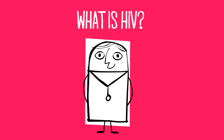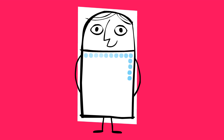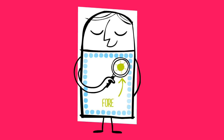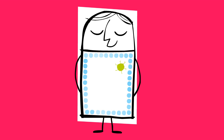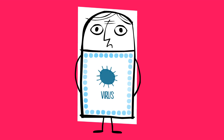What is HIV? Everybody has an immune system. The immune system is made up of lots of specialised cells designed to recognise any foreign cells that enter the body and cause illness. Some of these foreign cells could be bacteria, which can cause a sore throat, or a virus, which can cause a cold.